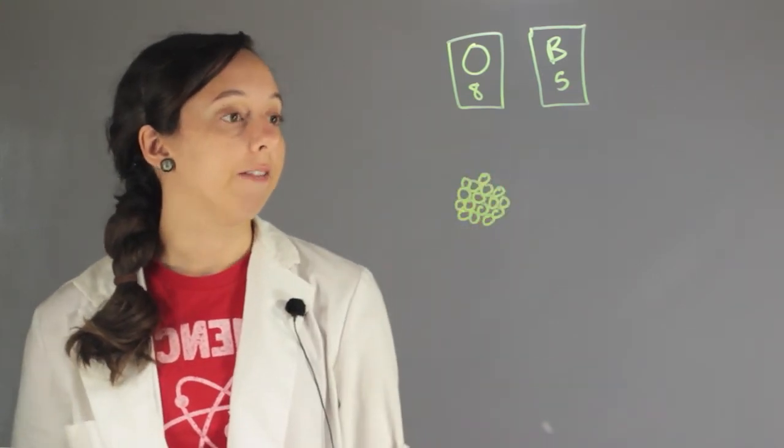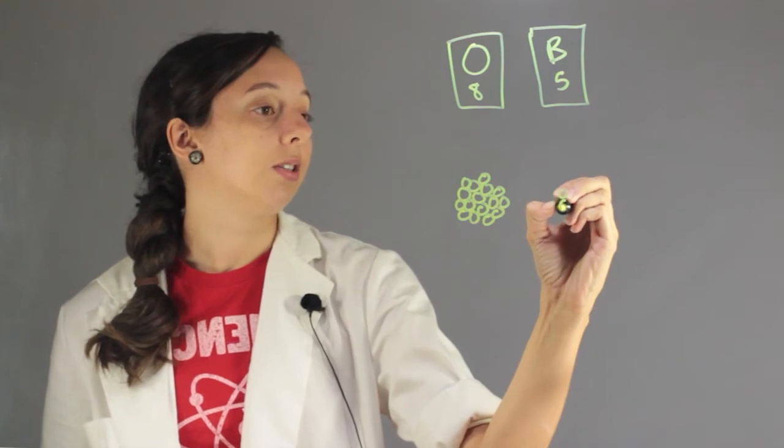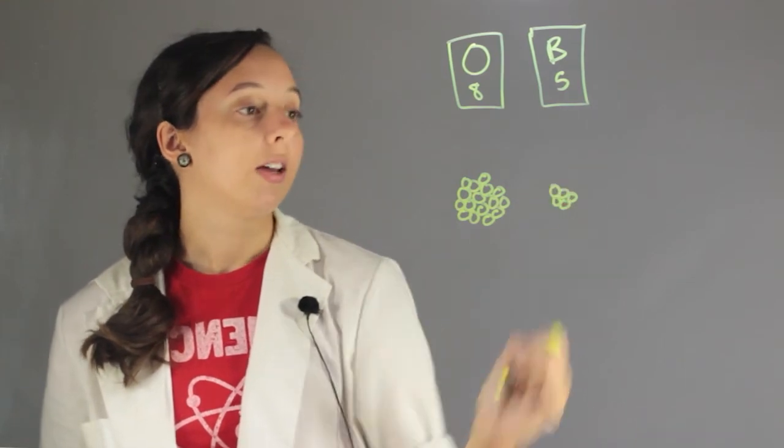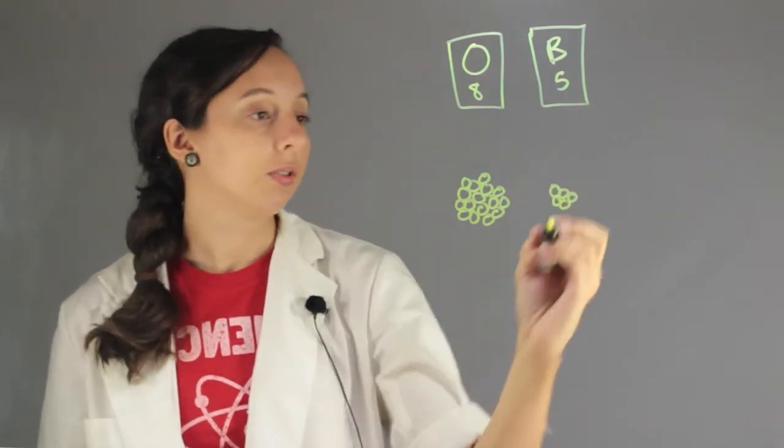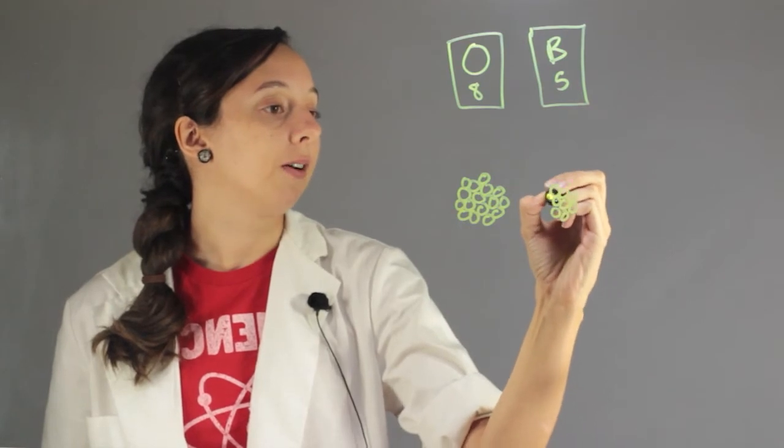And boron is going to have five protons: one, two, three, four, five, and also probably five neutrons: one, two, three, four, five.